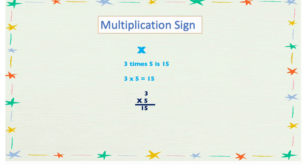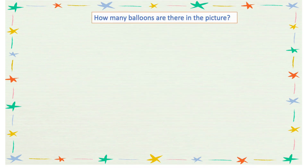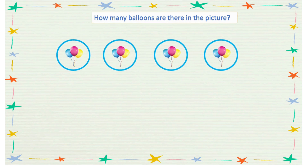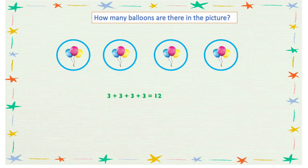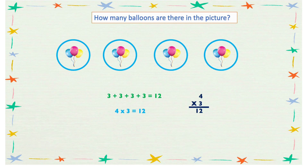Let's look at another example. How many balloons do we have in this picture? Here we have 4 groups and each group has 3 balloons. So we can do 3 plus 3 plus 3 plus 3 equals 12, or we can do it in multiplication form, which is easier: 4 times 3 equals 12. You can also write it vertically: 4 × 3 = 12. So we have 12 balloons all together.